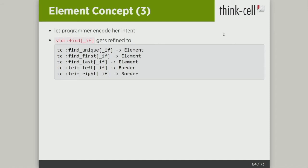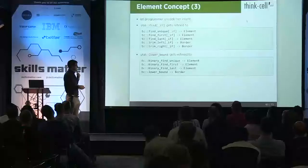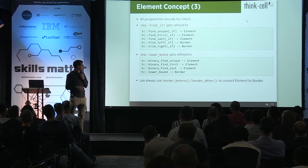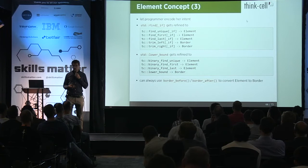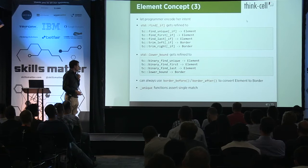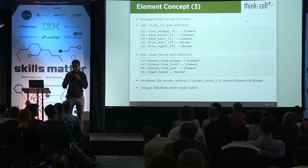std::lower_bound gets used very often as a tool for binary search. Similarly, we have binary_find_unique, find_first, find_last — which all return elements, and these were the vast majority of usages of lower_bound. Then you have the actual lower_bound which returns a border. You can always use border_before, border_after, or element_before, element_after to get from one thing to the other, so you're not stuck in the world of borders or elements. We found it very helpful to assert when you're expecting a single match.